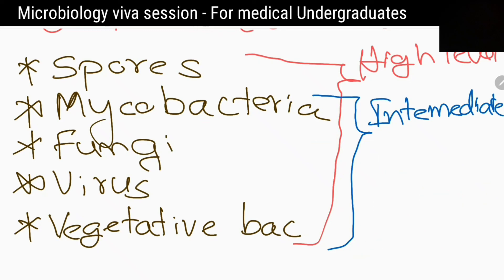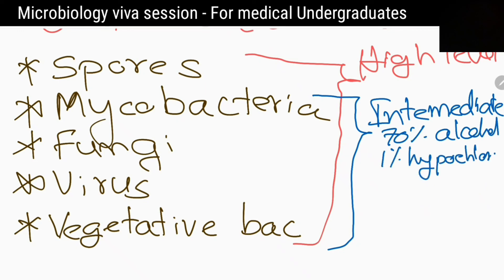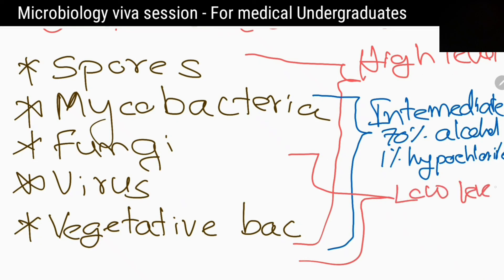Low level disinfectants like quaternary ammonium compounds kill vegetative bacteria, enveloped viruses, and some fungi, but cannot kill mycobacteria and spores.